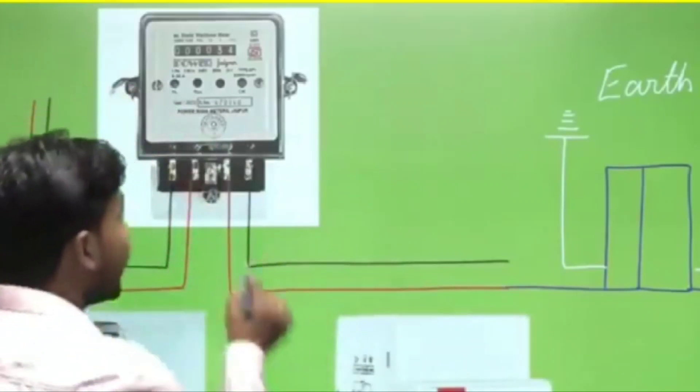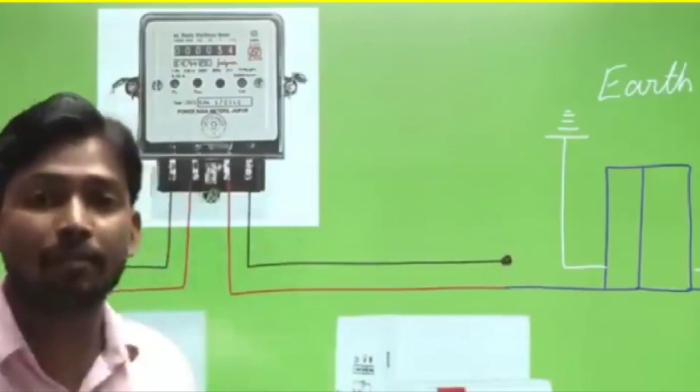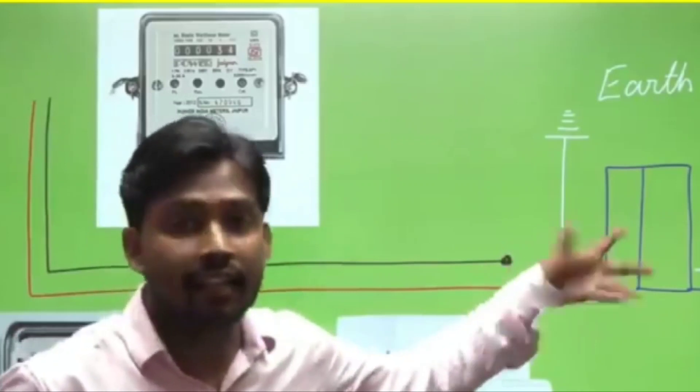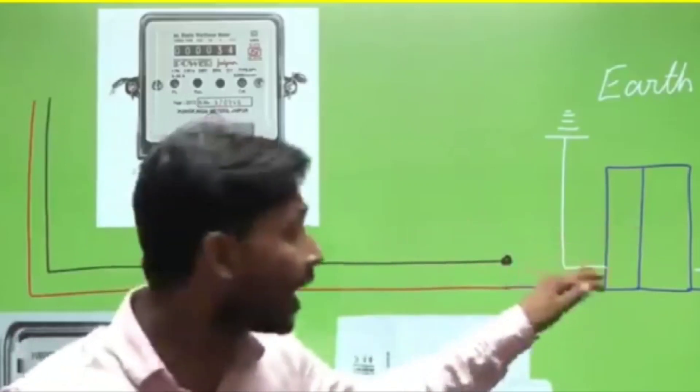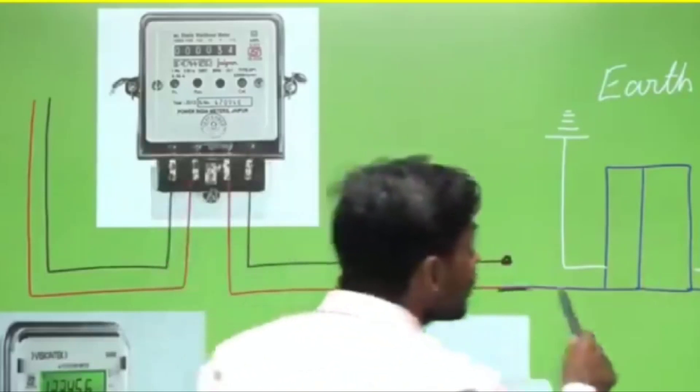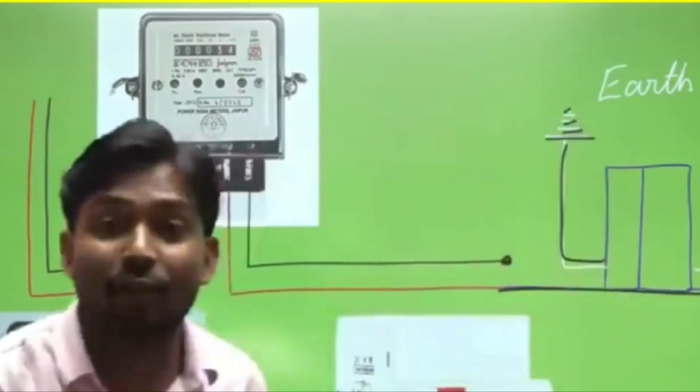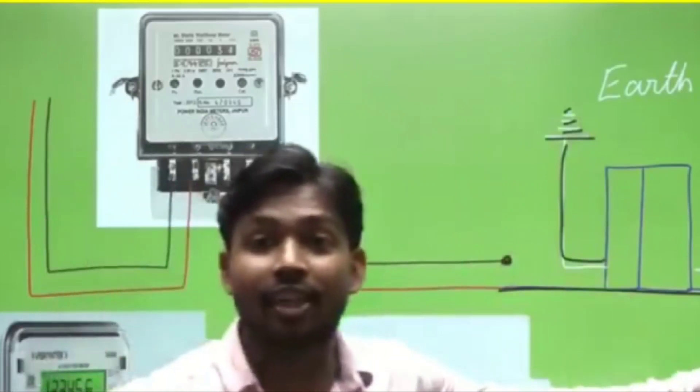So what do people do? They create a connection here where the neutral stops in the middle and bypasses the meter. The current goes through there instead of through the meter, so it doesn't get counted properly. They always work around it and force the current through the bypass.